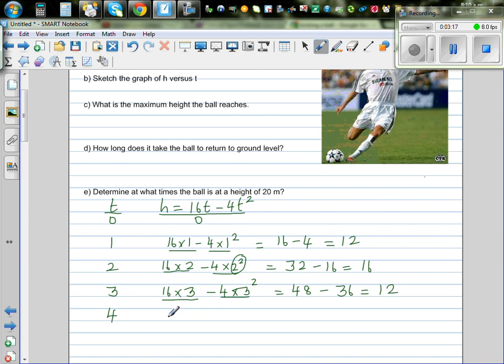So 4, it will be 16 times 4, minus 4 times 4 squared. 4 times 4 squared. So this is 16 times 4 is 64, minus 64, which is 0. So what is this table telling me? So when the ball was kicked, it is on the ground and after 4 seconds it is again on the ground. So I hope you understand that anything that goes up has to come down.